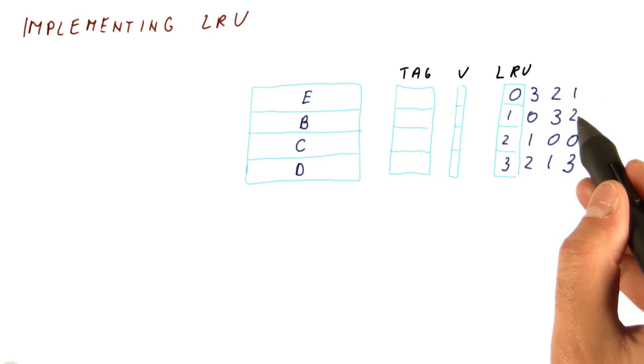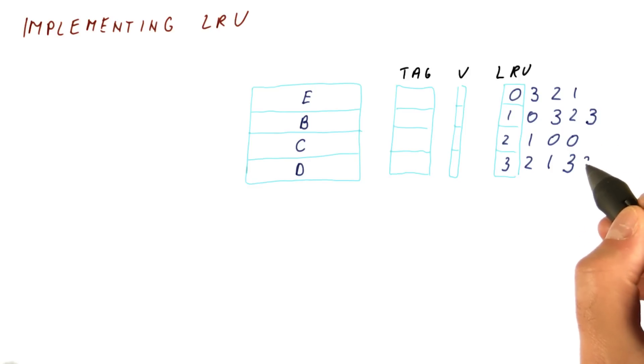Let's do another one of those where let's say block B, that is almost the most recently used block, is accessed. In that case, this counter needs to become 3. All counters that were above its original value of 2 need to be decremented. So this becomes 2, but these two stay the same because they are below 2. So again, we have this situation.